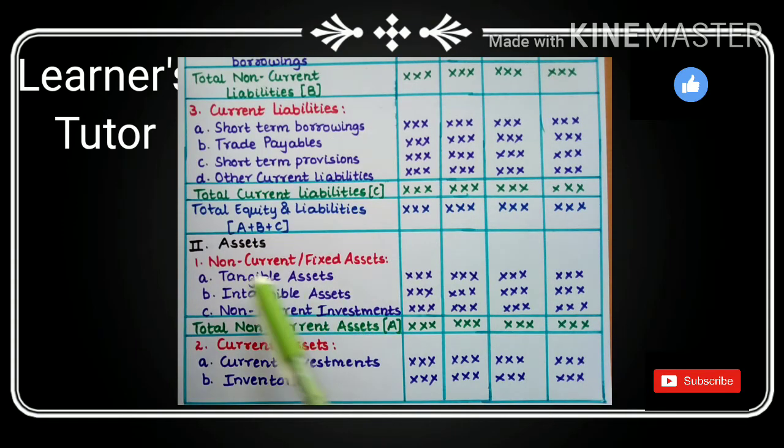These are the two headings. Under fixed assets we have tangible assets, intangible assets and non-current investments. Assets can be like fixed assets like land and building, furniture, machinery, etc.